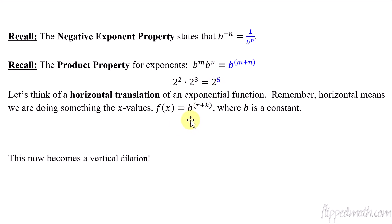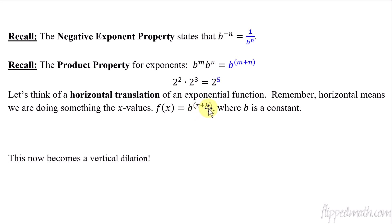That leads us to this thing called horizontal translation, and this is kind of cool. When you have an exponential function and you do a horizontal translation — horizontal means we're affecting the x values, left and right. So our original b to the x is being shifted to the left k units. So x plus k means you're shifting the whole thing to the left. We learned a lot about that from Mr. Brust when we were doing transformations on different functions.